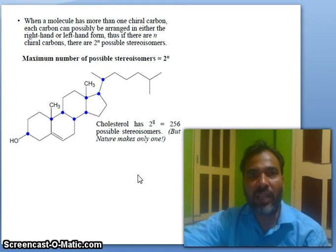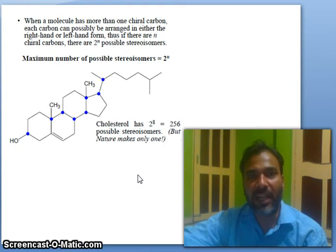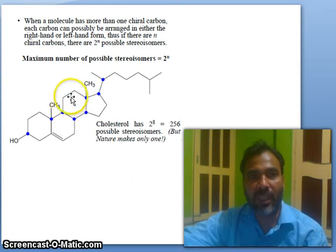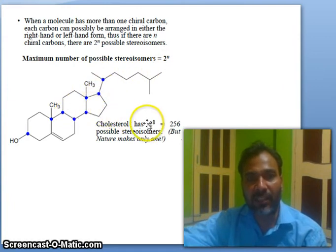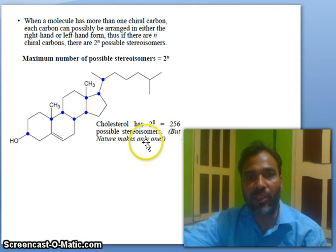When a molecule has more than one chiral carbon, each carbon can possibly be arranged in either the right-hand or left-hand form. Thus, if there are n chiral carbons, there are 2^n possible stereoisomers. For example, cholesterol has eight chiral centers, so 2^8 = 256 possible stereoisomers, but nature makes only one.